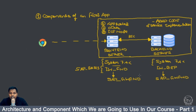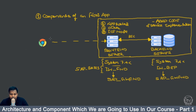Before that, let's try to understand a simple SAP system landscape — most likely the one we will be working on. In this screen you can see we have a web browser, which can be Chrome, Firefox, or Internet Explorer. As the applications are built with UI5, they will have a responsive nature, so you can use this browser on a mobile device, desktop, laptop, or tablet.